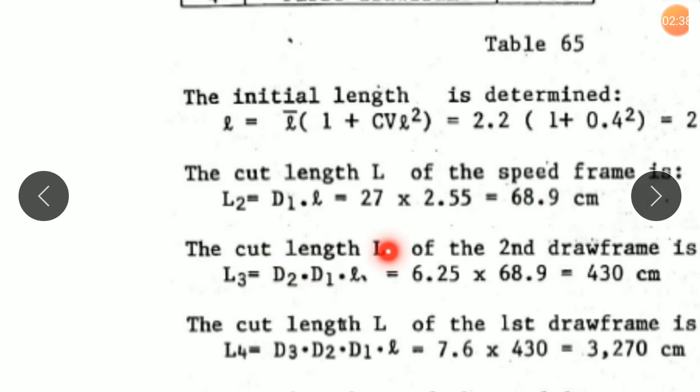The cut length corresponding to second draw frame is L₃. Ring frame represents the first process, so L₃ equals D₂ × D₁ × L. This value has already been calculated as 68.9, so with draft in speed frame of 6.25, it works out to be 430 centimeters.